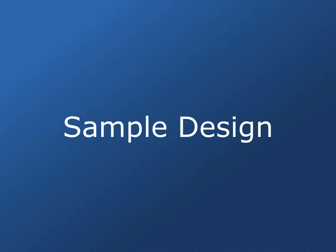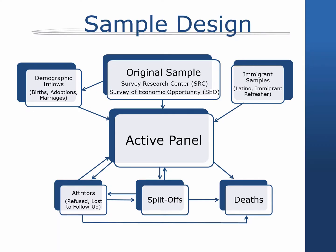Next, let's take a closer look at the PSID's sample design. The original 1968 sample was drawn from two sources: a nationally representative sample of roughly 3,000 families designed by the Survey Research Center at the University of Michigan, also known as the SRC sample, and an oversample of roughly 2,000 low-income families drawn from the Survey of Economic Opportunity, or the SEO sample.